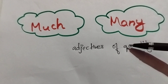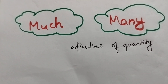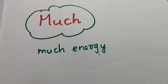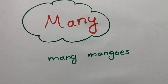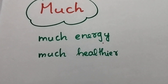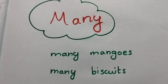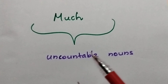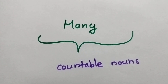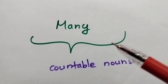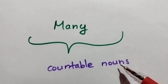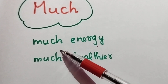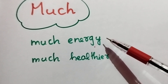For example: much energy, many mangoes, much healthier, many biscuits. Much is used for uncountable nouns and many is used for countable nouns — this is a major difference.